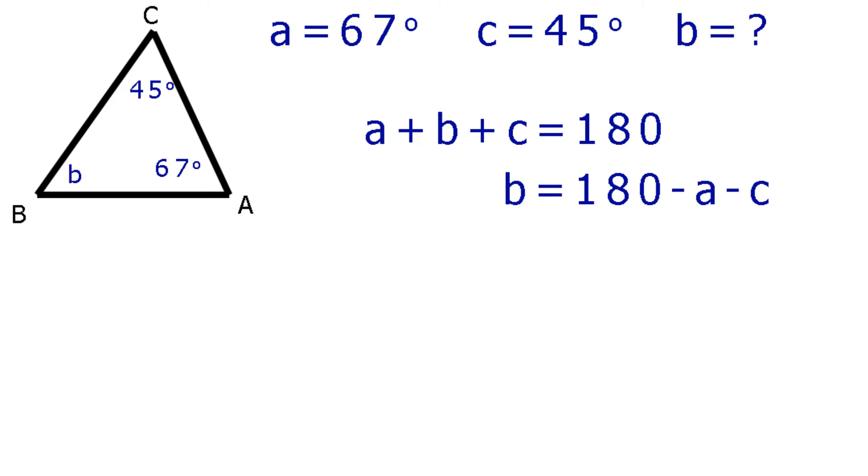Then we make b the subject. b equals 180 minus a minus c. Then we substitute in the values of a and c. a equals 67 remember. And c it was 45. So b equals 180 minus 67 minus 45. We work out the arithmetic on the right hand side. Minus 67 and minus 45 gives minus 112. So b was 180 minus 112. 180 minus 112 is 68. b equals 68. And don't forget to underline your answer.